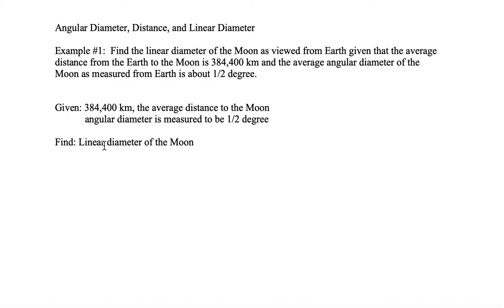We want to find the linear diameter of the Moon. Now we need to choose the correct equation and solve the problem. The equation we want to use is 1c because we are given a unit of half a degree. We want the equation where alpha is given in terms of degrees, so we choose equation 1c and now we need to substitute.